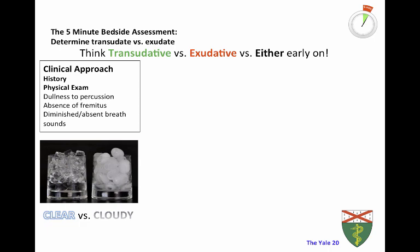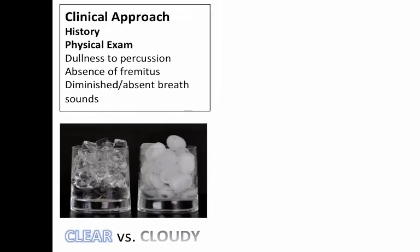One of the most important things you do is take a history and physical. When you know a patient has an effusion, you want to gather information that helps you differentiate between transudative versus exudative effusion early on. This is really important because you do very different things based on that distinction. For history, ask about pulmonary history, underlying lung pathology, and systemic illnesses. On physical exam, look for dullness to percussion, absence of fremitus, and diminished or absent breath sounds.